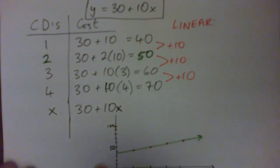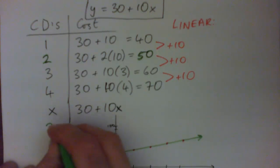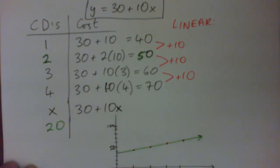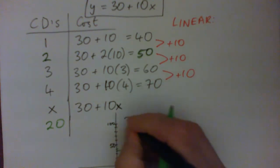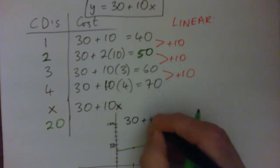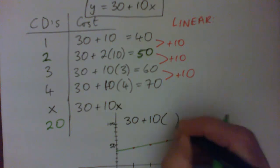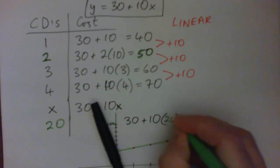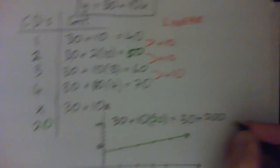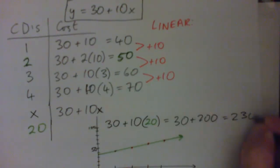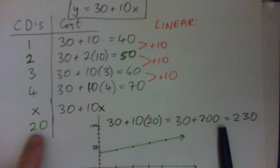All right. So 20 CDs, which a quiz might ask, we just go, okay, we've got to pay the $30 membership fee plus $10 per CD. So 10 times 20. So that's giving us 30 plus 200. So $230 is the cost of 20 CDs. Perfect.